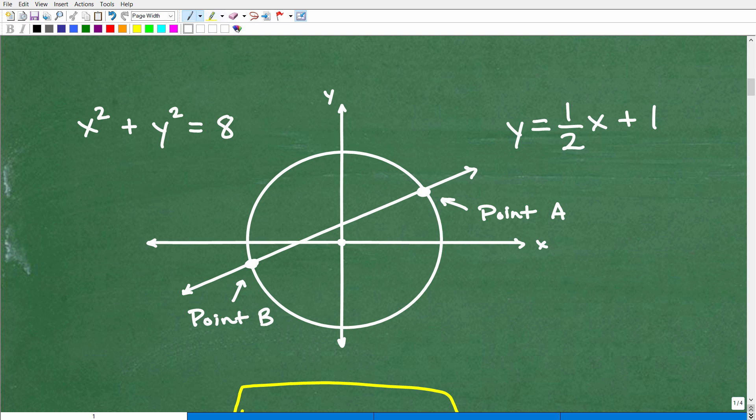All right. So here is our equation for the circle. Now, I'm not going to get into the equations of conic sections and circles. I'm just telling you, this is the equation that represents this circle. And then here we have the equation that is, of course, this linear equation right there. All right. So we're looking for these two points of intersection.